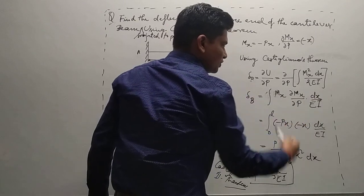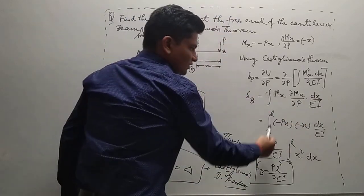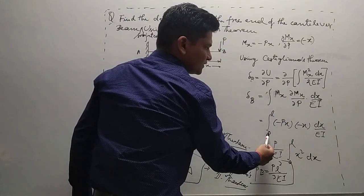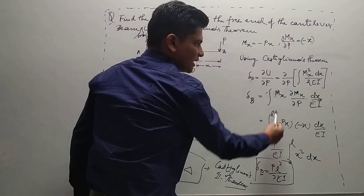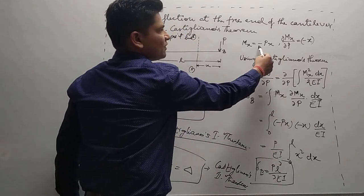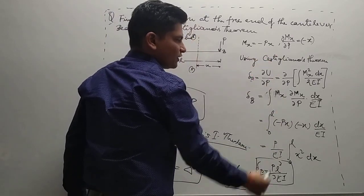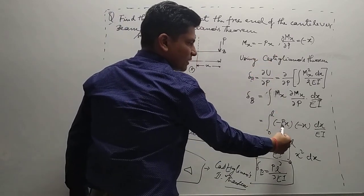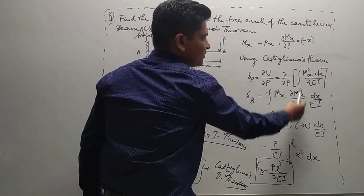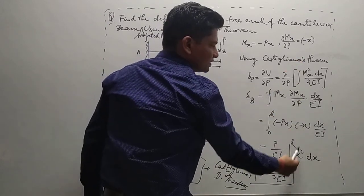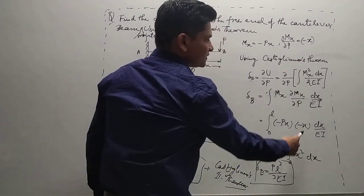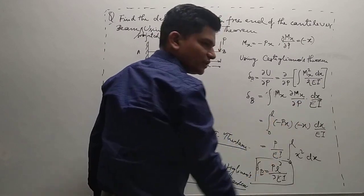Putting in the limits 0 to L, with Mx equal to minus Px and δMx/δP equal to minus x, we get the integral from 0 to L of (minus Px)(minus x) dx upon EI.